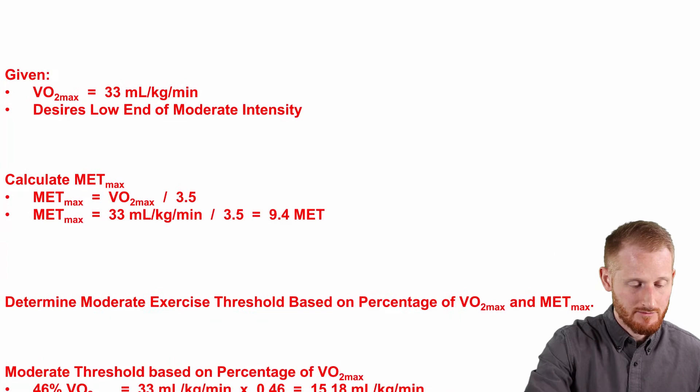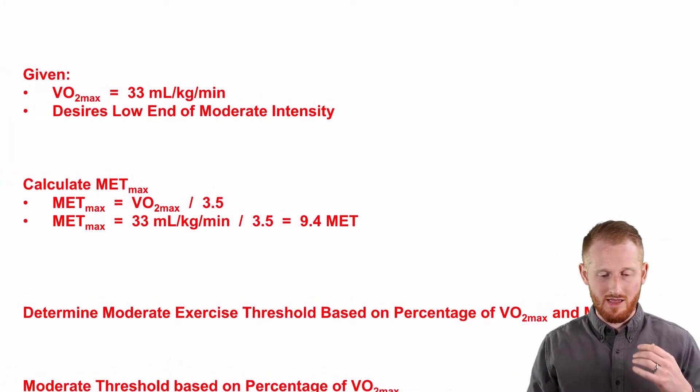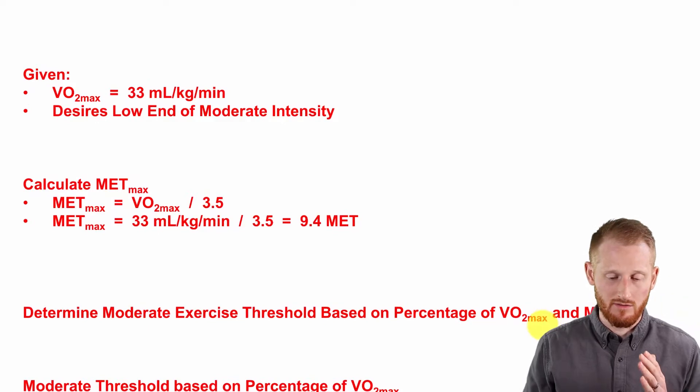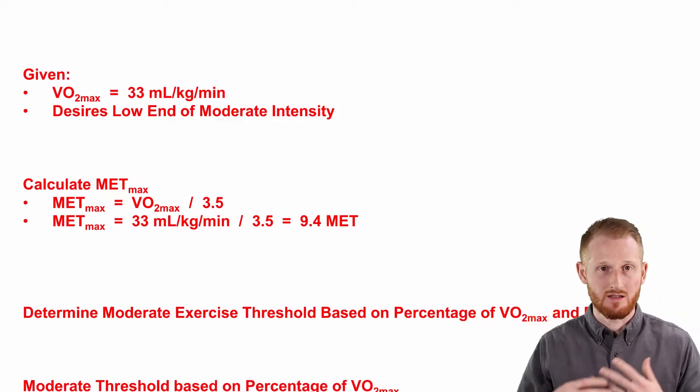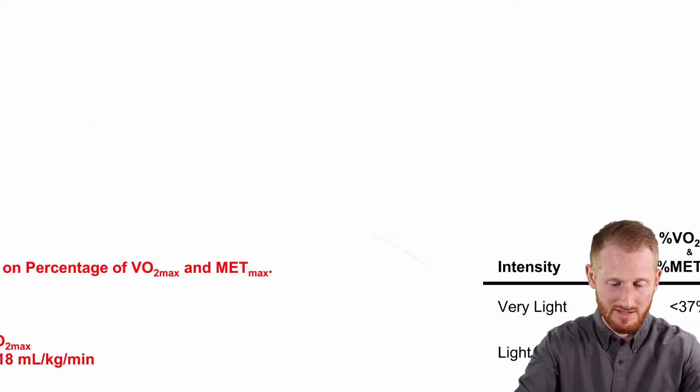And so the next thing we need to do is determine what is considered a moderate intensity for VO2 max and MET max as a straight percentage of those values. I have a table here we're going to look at together.